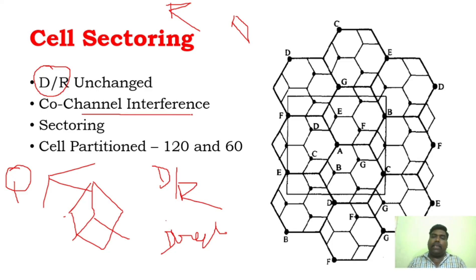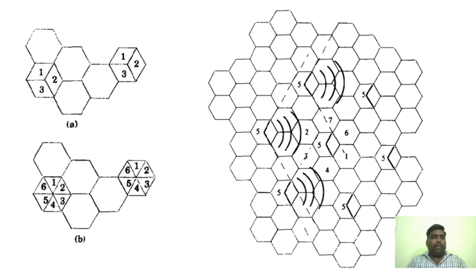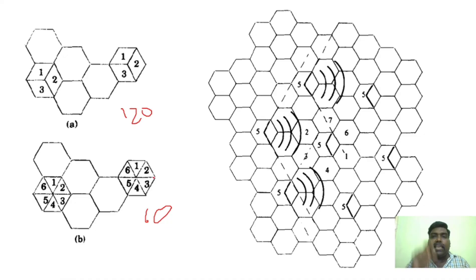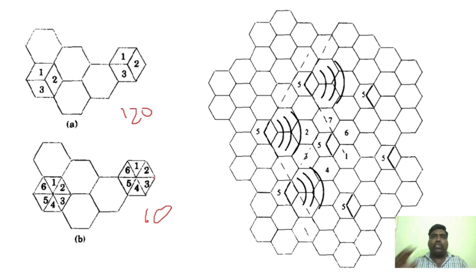The cell can be partitioned into sectors of 120 degrees or 60 degrees. A cell sectored into 120-degree sectors gives 3 sectors, and into 60-degree sectors gives 6 sectors. The core concept of cell sectoring is that the number of co-channel cells creating interference is reduced by using directional antennas, which reduces co-channel interference.